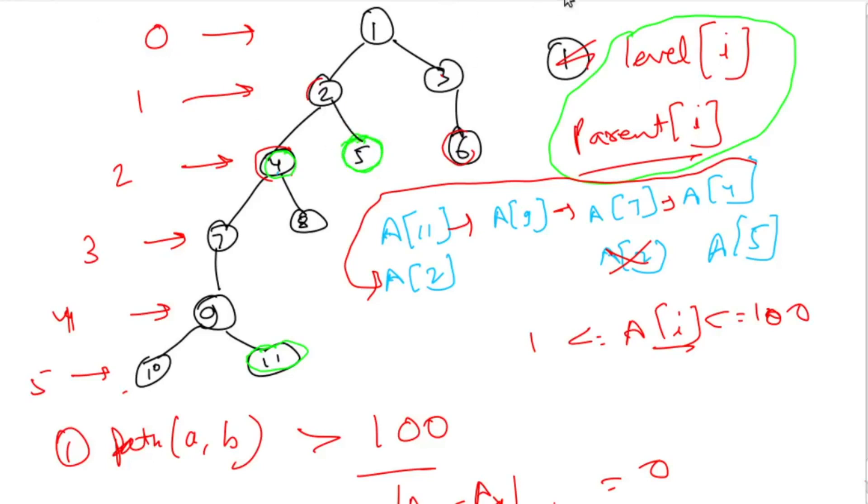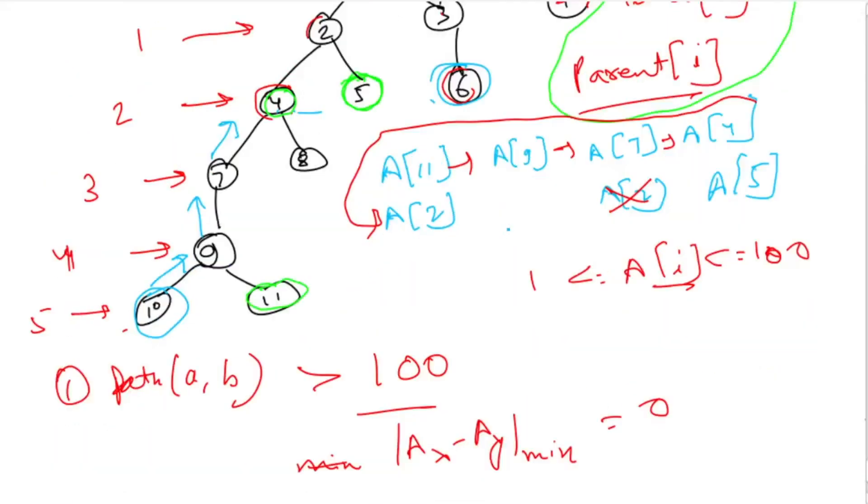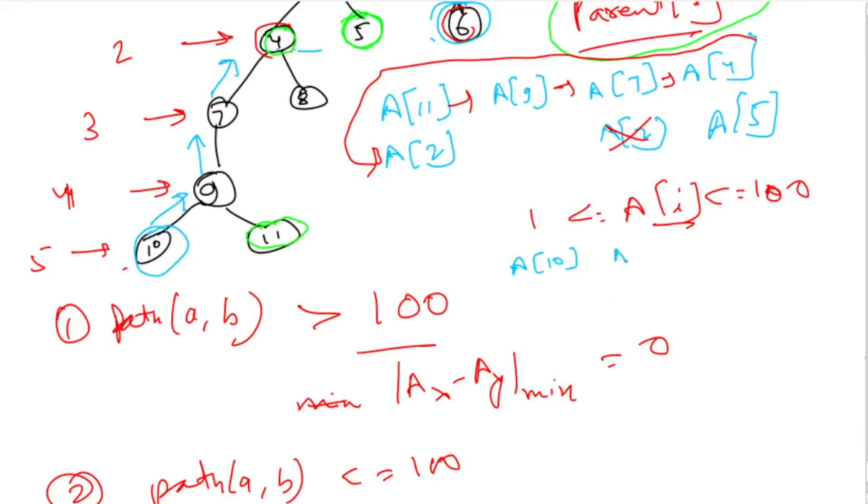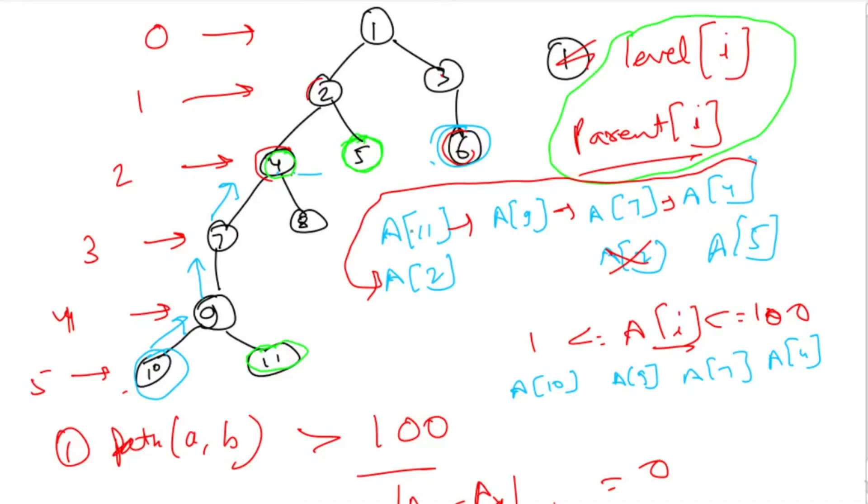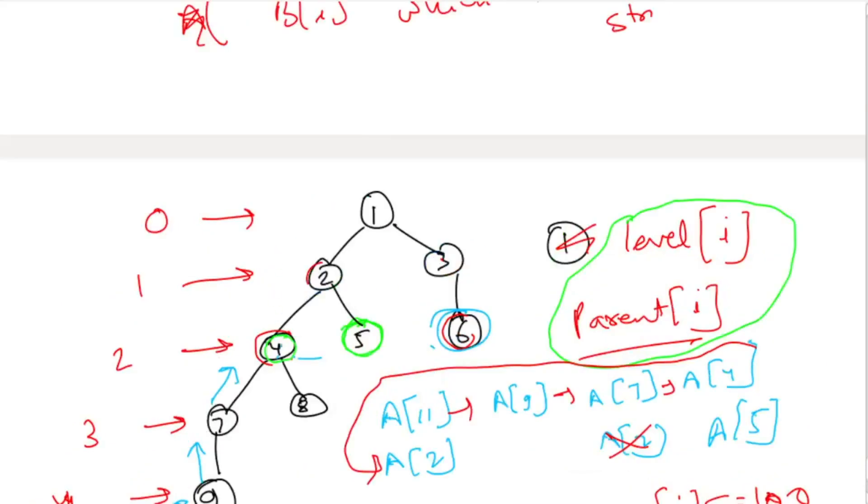We have to move from 10 to 6. First we move from 10 to parent of 10 which is 9, then parent of 9, then parent of 7. Now our levels have become equal. The sequence is a10, a9, a7, a4. Our remaining path is 4, 2, 1 and 6, 3, 1 - that is, parent of 4, parent of 2, until both become equal.